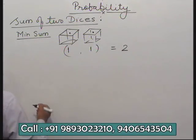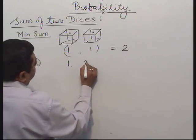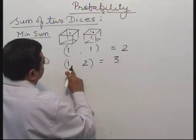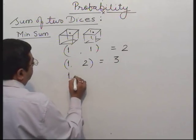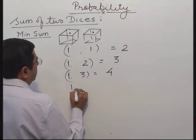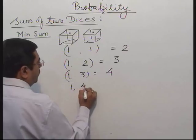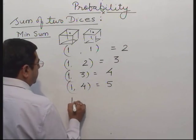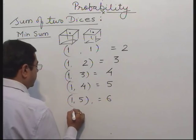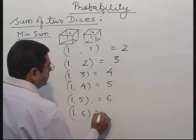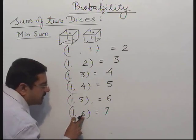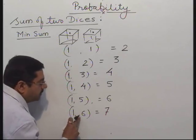This is the minimum sum. Then first die shows 1 and second die shows 2, so the sum is 3. First die 1, second die 3, that is 4. Then 5, then 6. Then 1 and 6, so sum total will be 7. The second die will show maximum number 6. This is the minimum sum and this is the maximum.